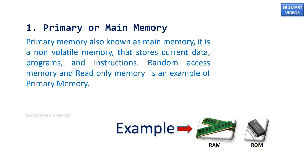Primary memory, also known as main memory, is a type of memory that stores current data, programs, and instructions. Random access memory and read-only memory are examples of primary memory.